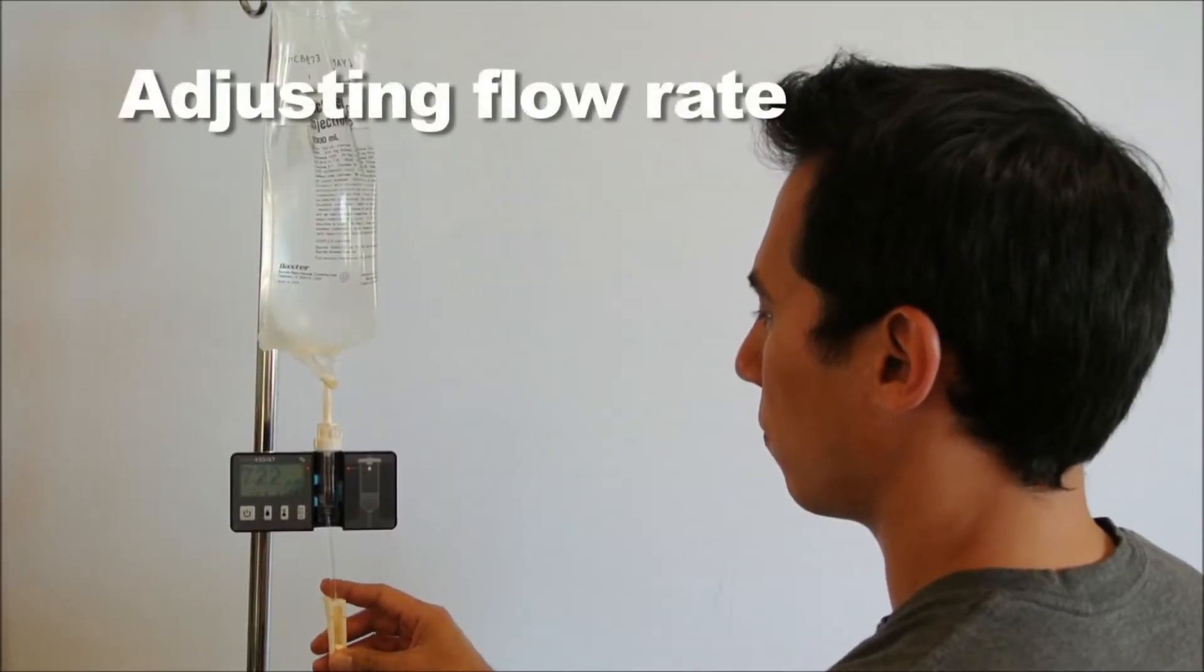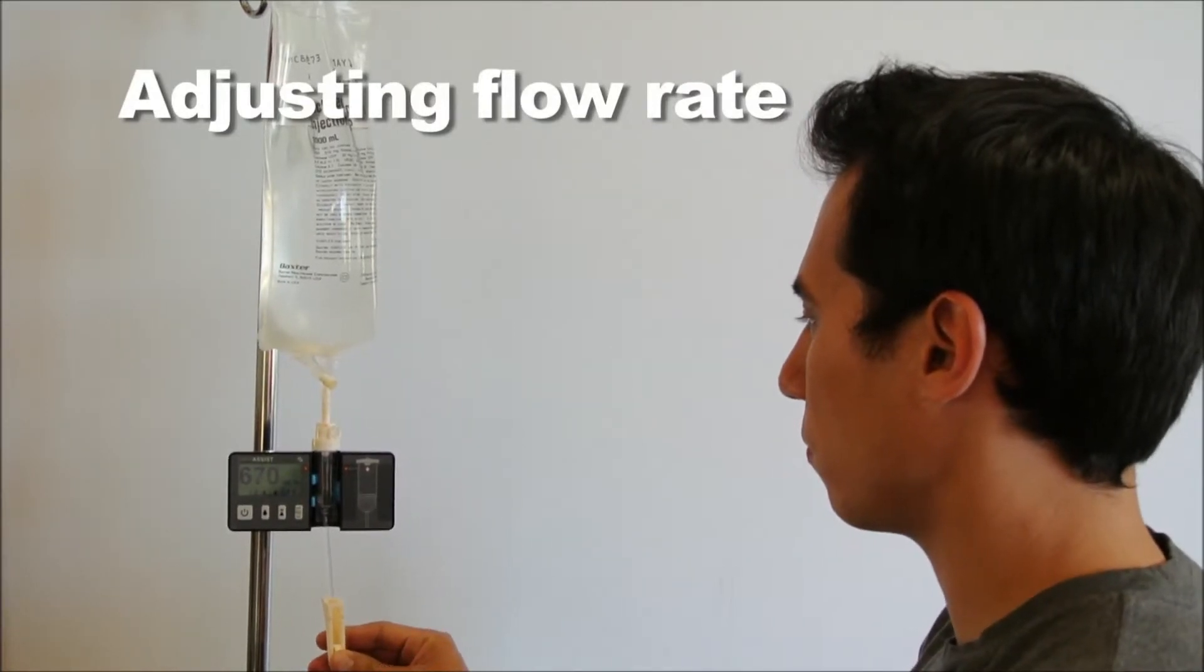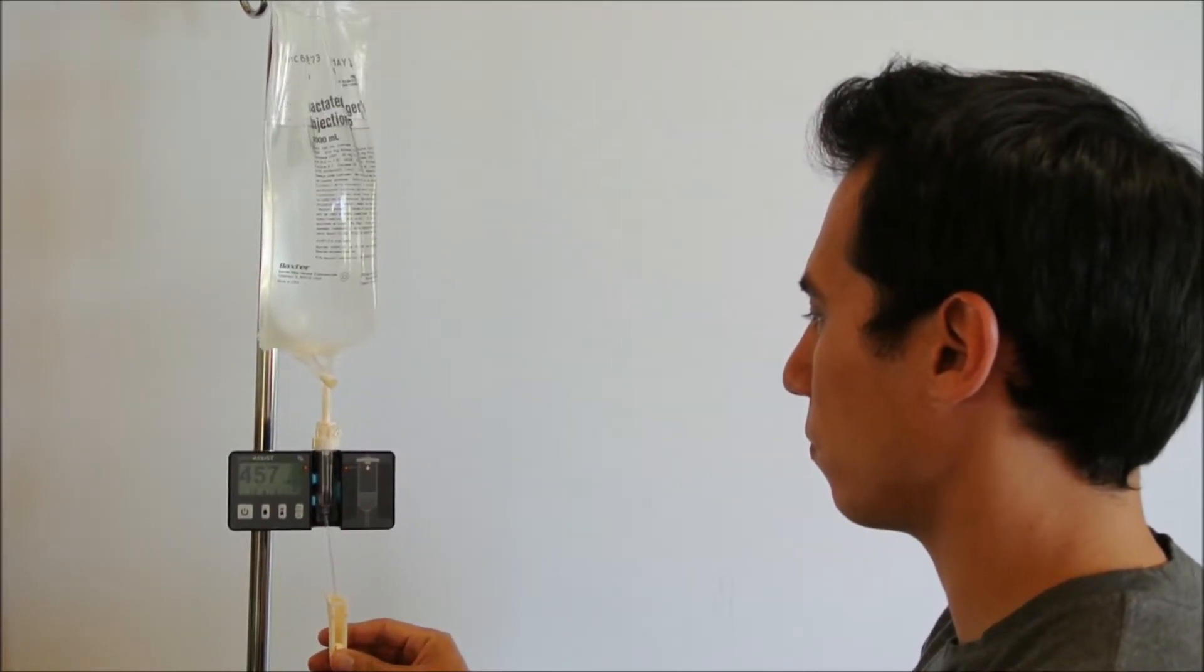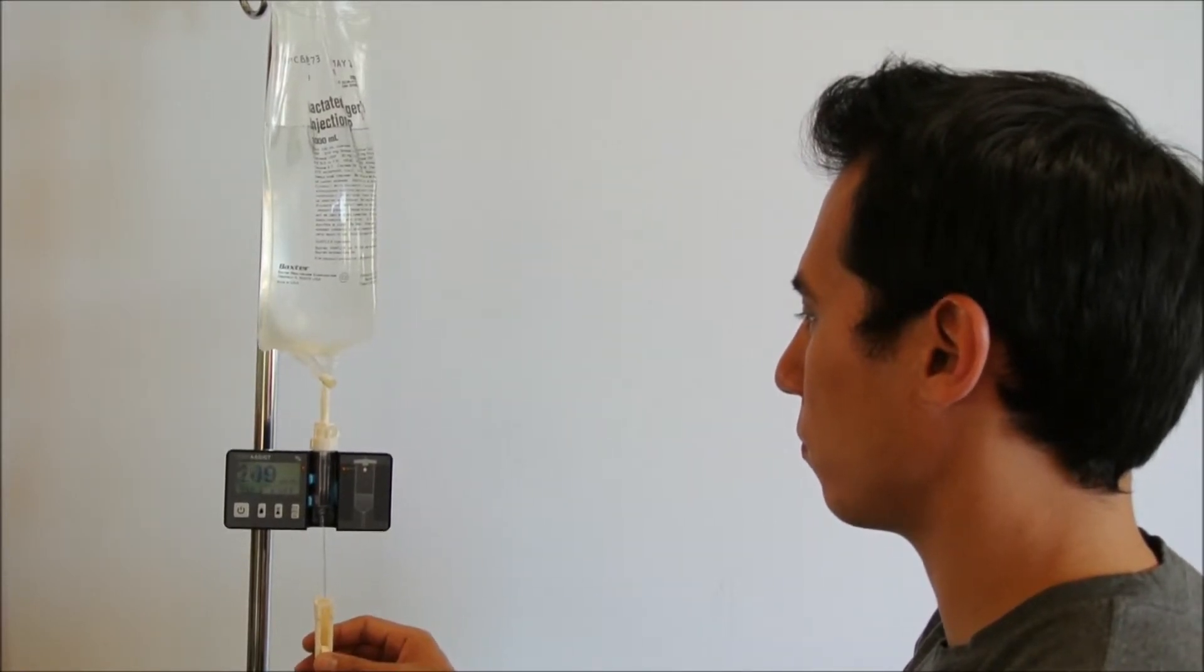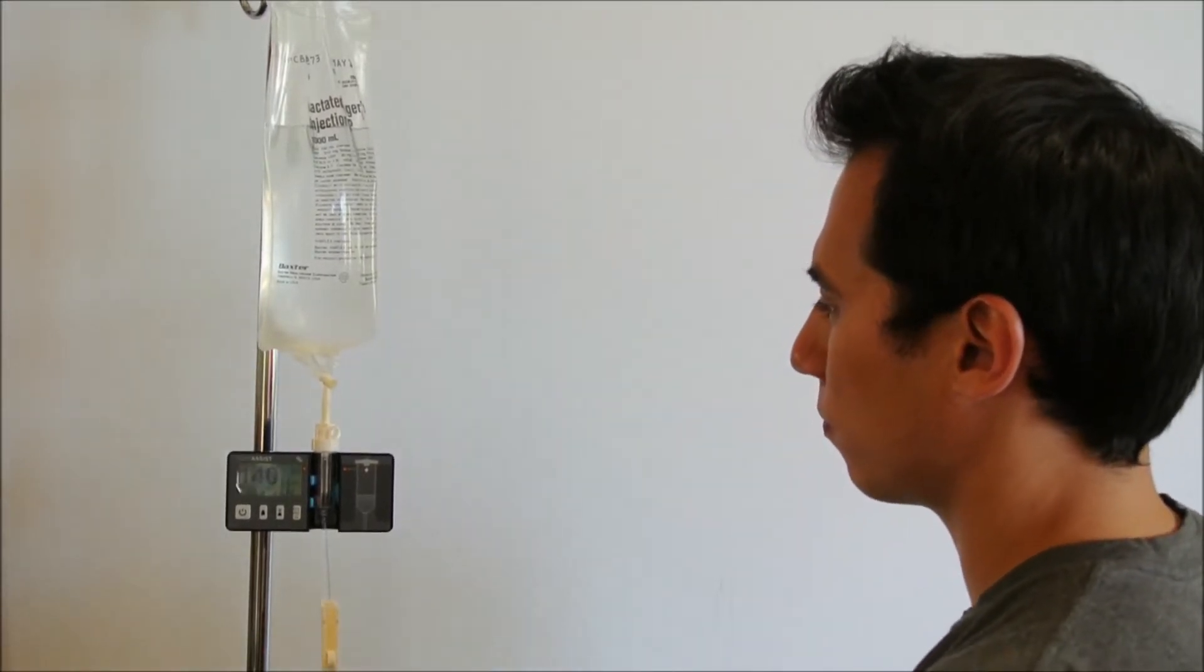Your drip assist will monitor the flow of fluid, but controlling the rate is still in your hands. Use the built-in roller clamp with the tubing set as you would normally. Adjust the flow until you are satisfied with the numbers on the screen.